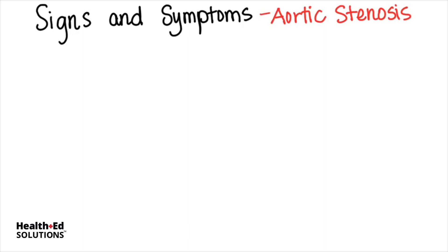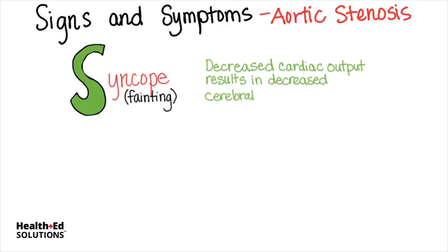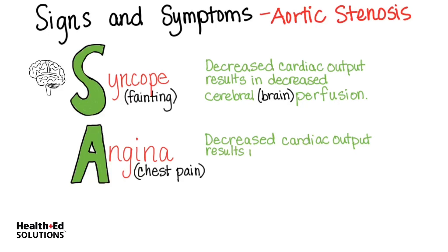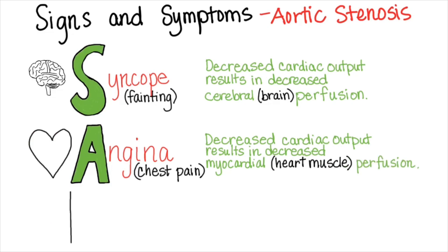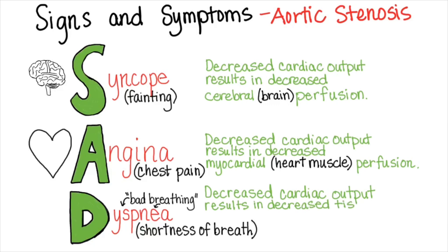Signs and symptoms of aortic stenosis can best be remembered with the acronym SAD. S stands for syncope, another word for fainting — this is due to a decrease in cardiac output that results in decreased cerebral, or brain, perfusion. A is for angina, or chest pain, caused by decreased cardiac output that results in decreased myocardial, or heart muscle, perfusion. And D is for dyspnea, or shortness of breath — dyspnea literally means bad breathing — due to decreased cardiac output resulting in decreased tissue perfusion. The patients will feel starved for oxygen.